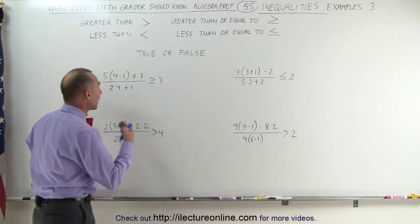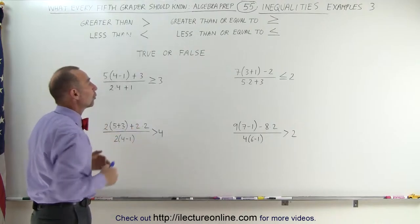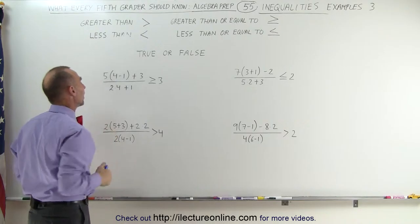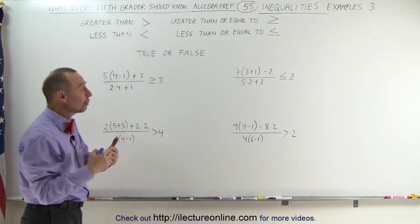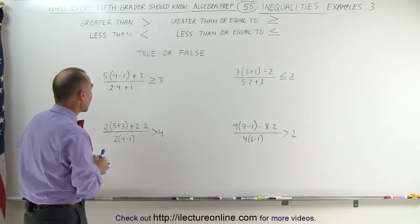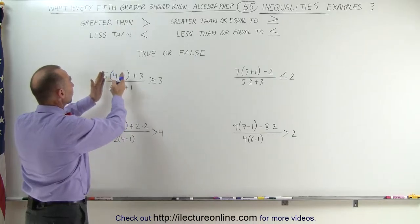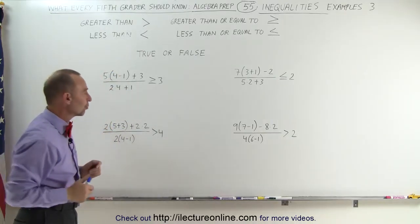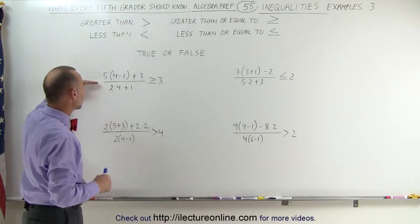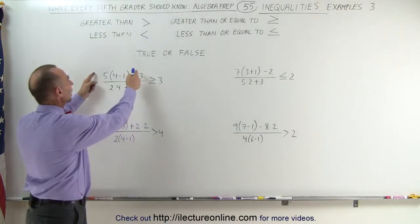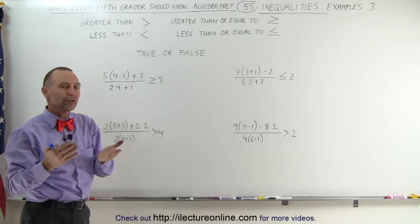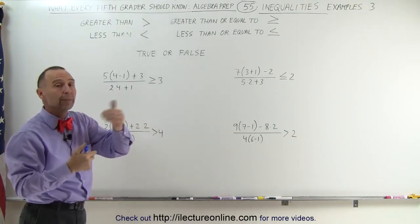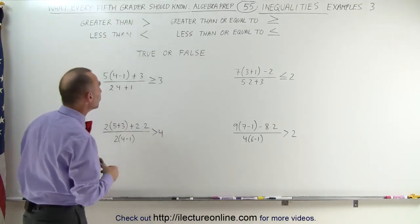Can we tell if these are true or false statements? In order to do that we have to simplify what's on the left side using order of operations. We want to do what's in the parentheses first, then multiply and divide before we add and subtract. For expressions with a numerator and denominator, work out the numerator first, then the denominator, and then divide the numerator by the denominator.